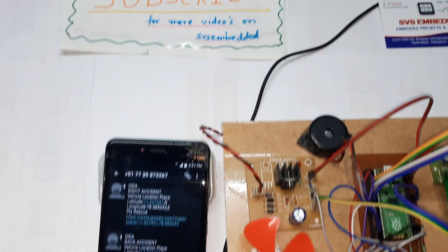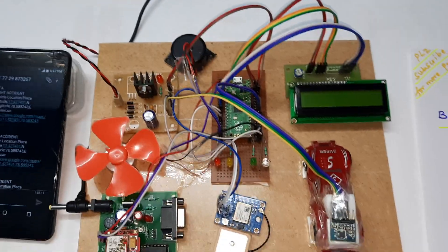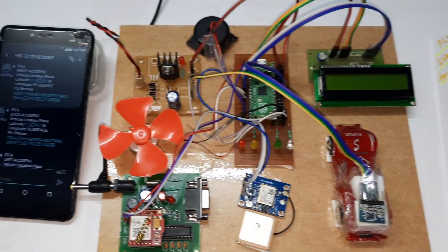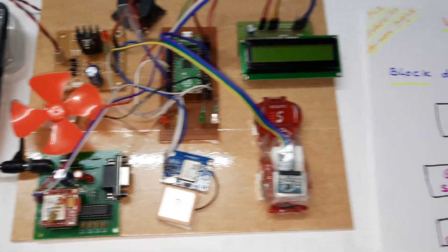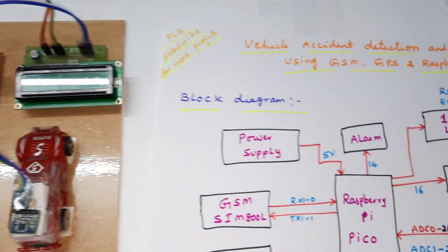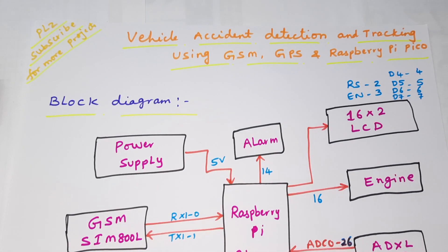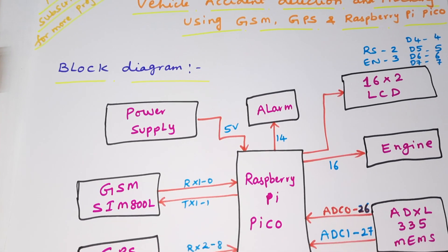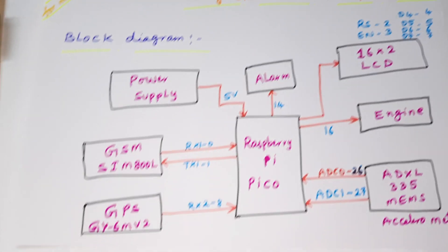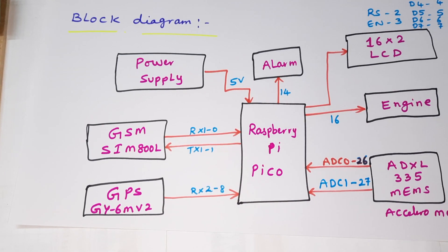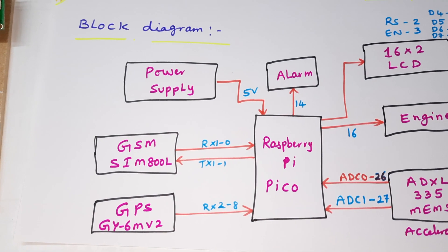Hi, we are from SVS Embedded. The project title is Vehicle Accident Detection and Tracking using GSM, GPS, and Raspberry Pi Pico. Here we are using a Raspberry Pi Pico.